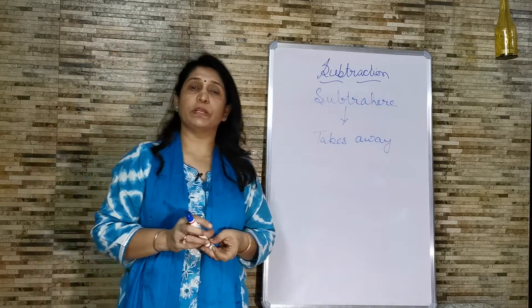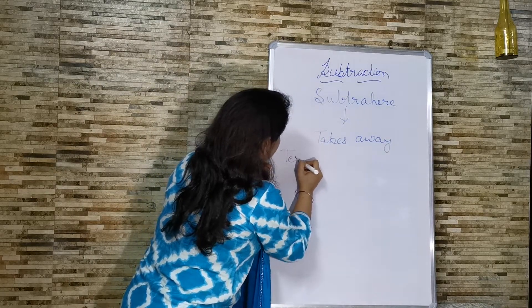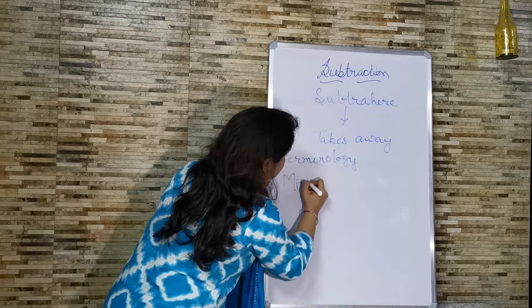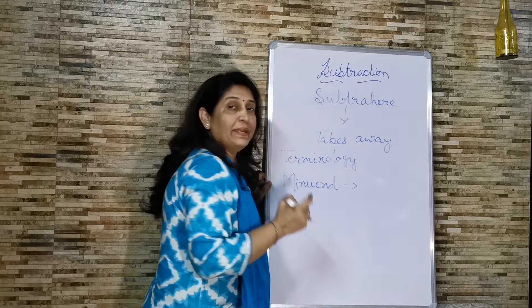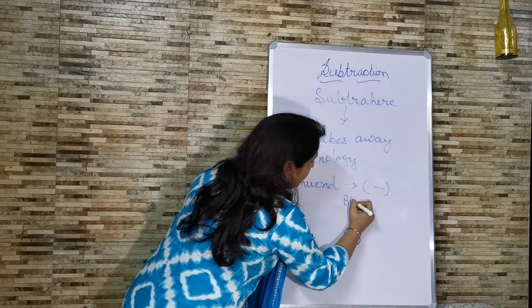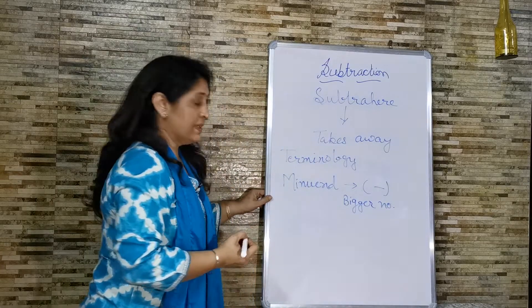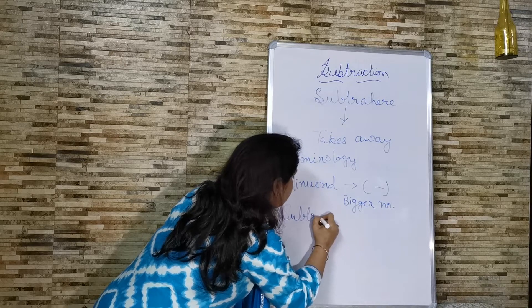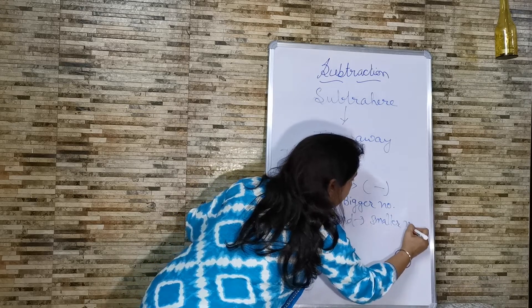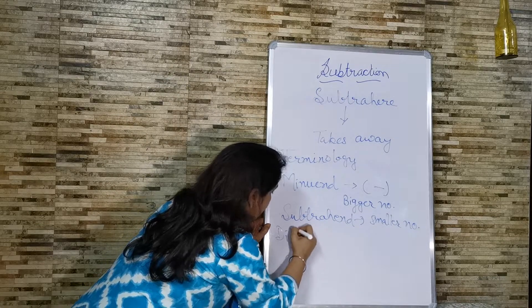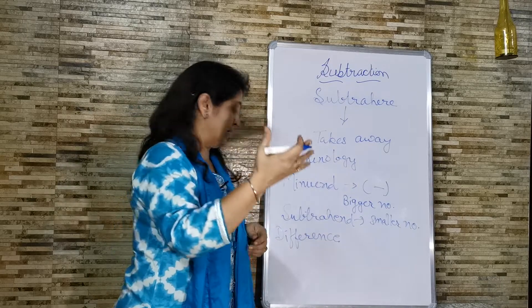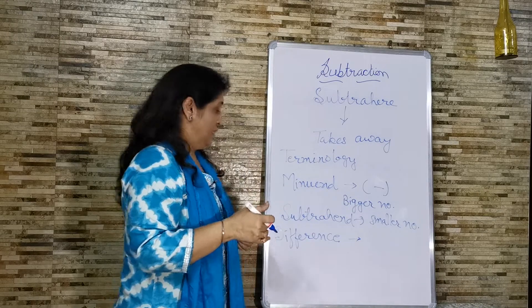The terminology used in subtraction: the first term is minuend. The minuend word is related to minus, which is the symbol of subtraction, and minuend is the bigger number. The second term is subtrahend — the smaller number which we have to deduct from the bigger number. The third term is difference — what we get after giving away something out of the bigger number, also called less, deduct, or decrease.